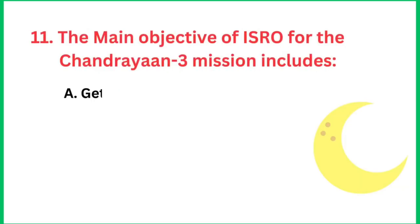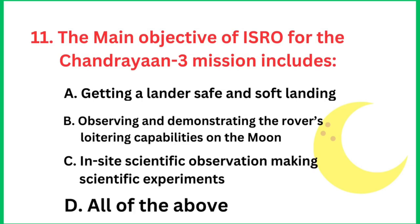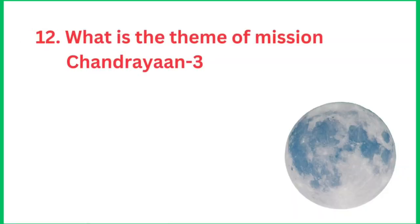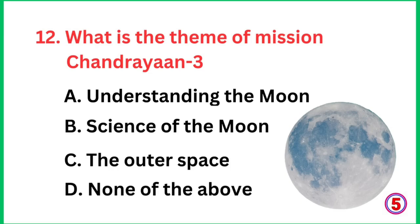The main objective of ISRO for the Chandrayaan 3 mission includes safe and soft landing, observing the surface, and conducting experiments — all of the above. The theme of the Chandrayaan 3 mission is 'Science of the Moon.'